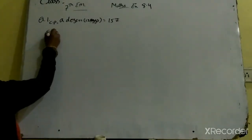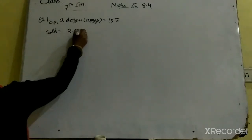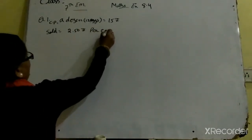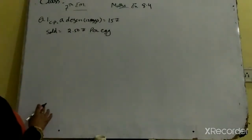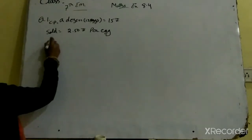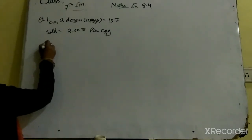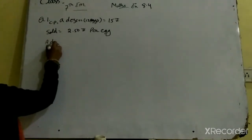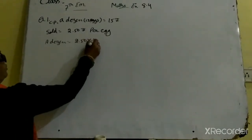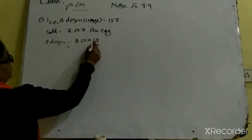Ussne sold kiya — 2.50 rupees per egg, matlab one egg 2.50 ka becha hai. To SP nikal rahe hain. One dozen ki SP: one egg ke hisaab se kiya hai, to one dozen mein 2.50 into 12 karo. 2.50 × 12 = 30.